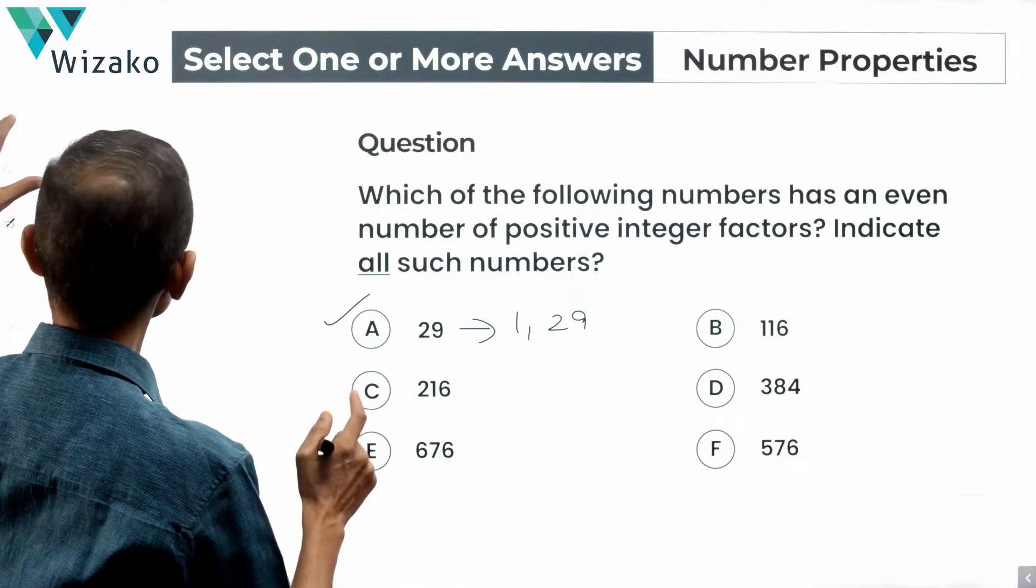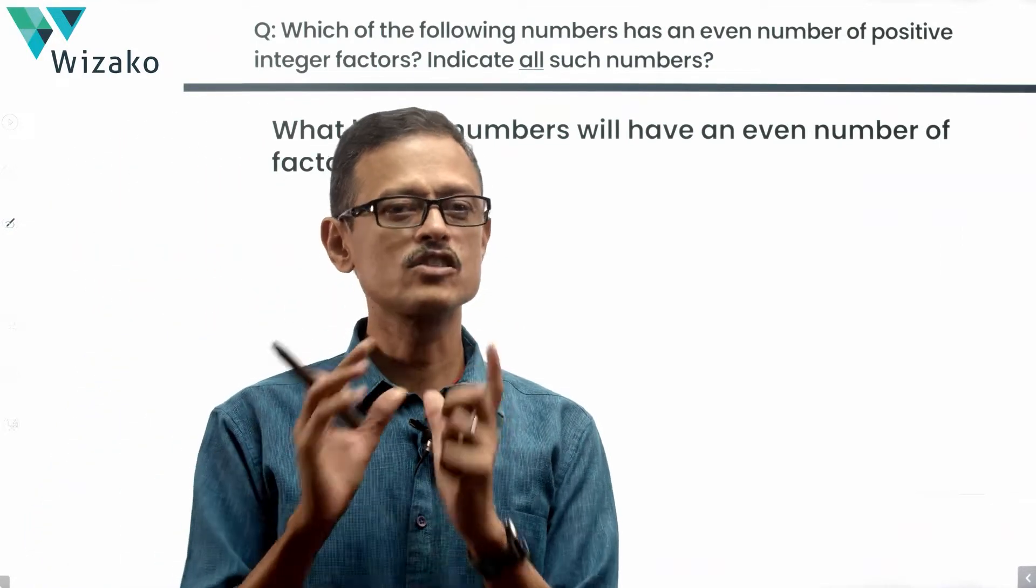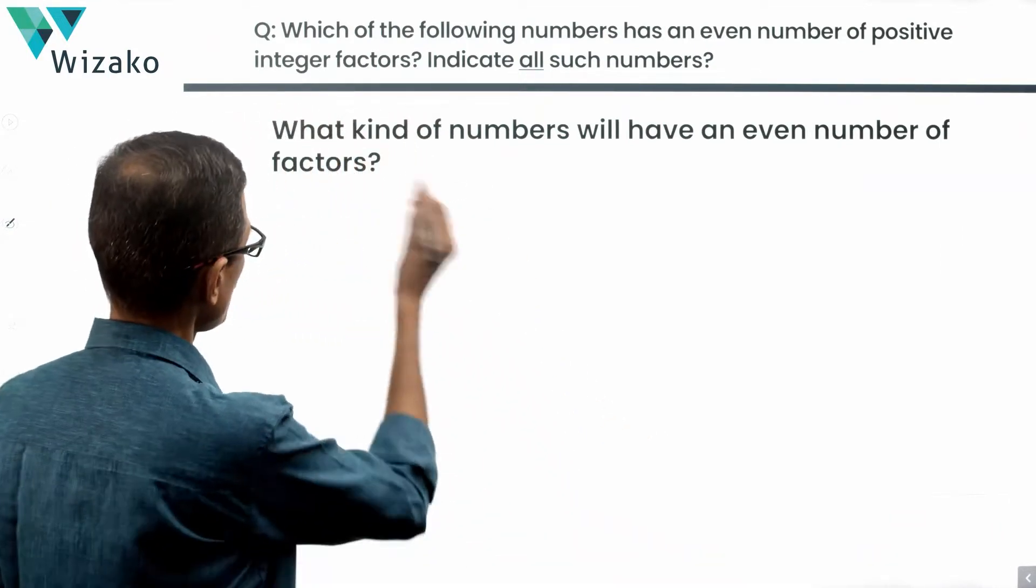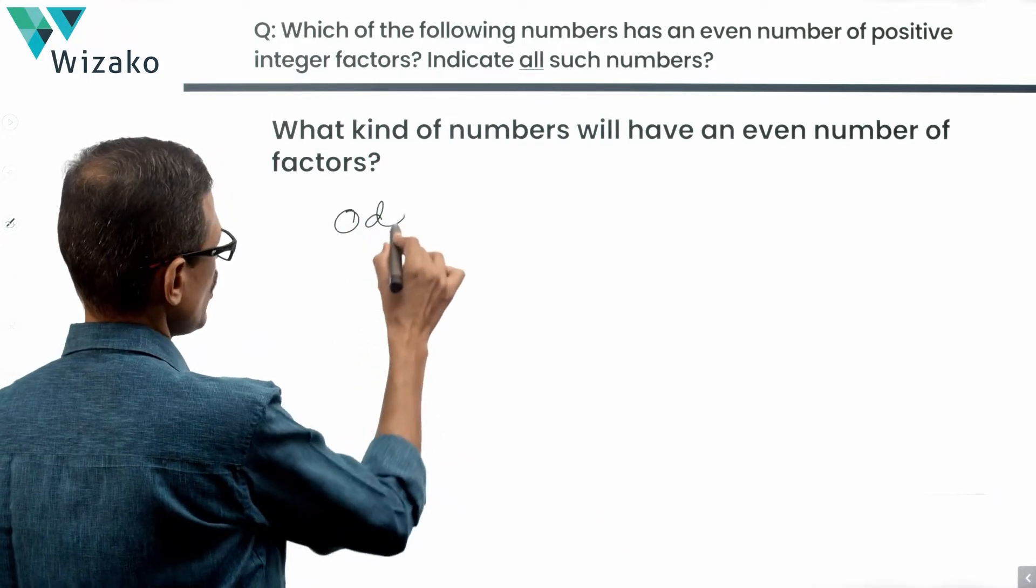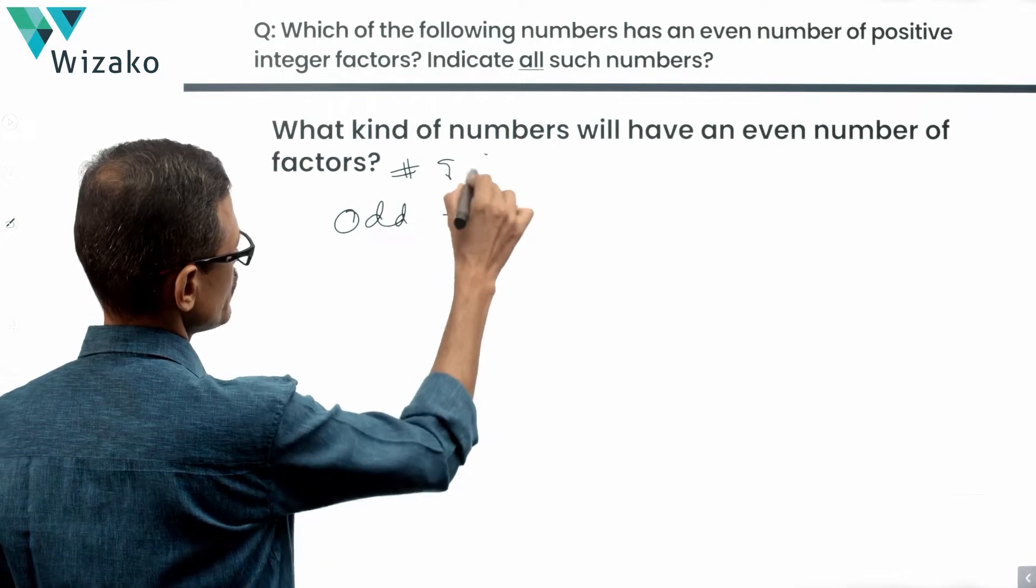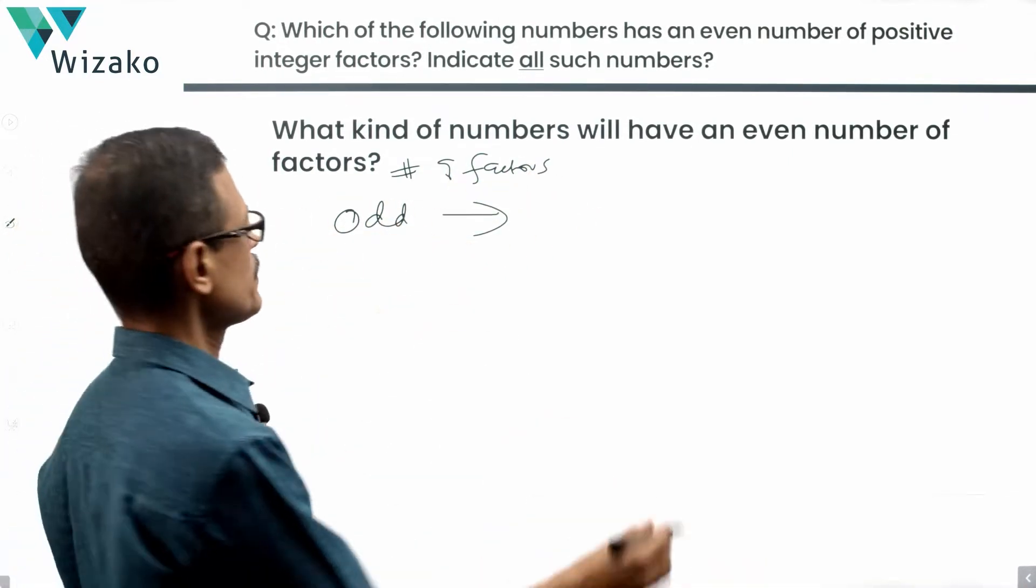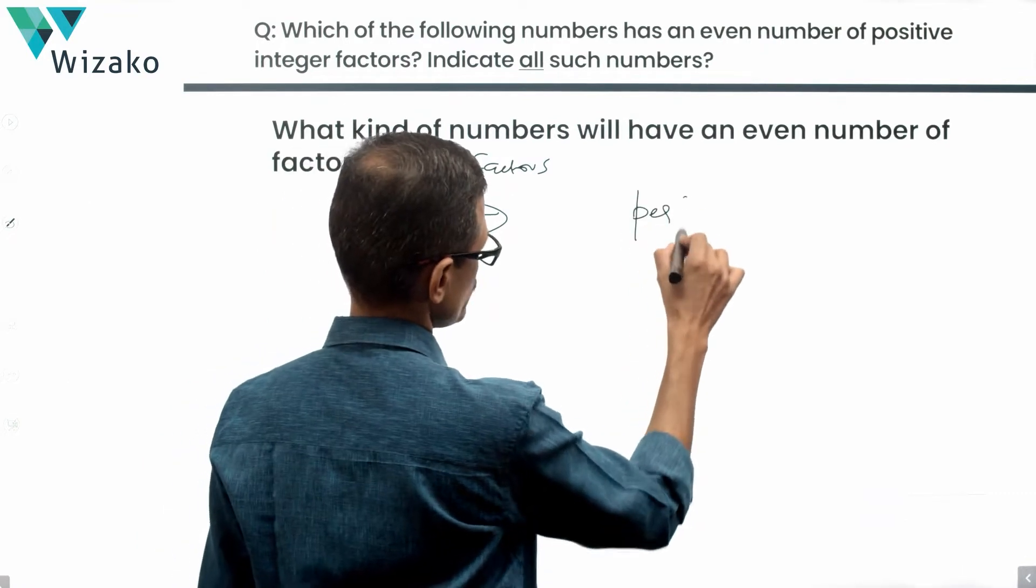Let's look at what kind of numbers will have an even number of positive integer factors. Let's look at the concept behind it. I'm going to start with odd and then move on to even. Odd number of factors, number of factors, this is talking about number of factors. If the number of factors is odd, such a number is going to be a perfect square.